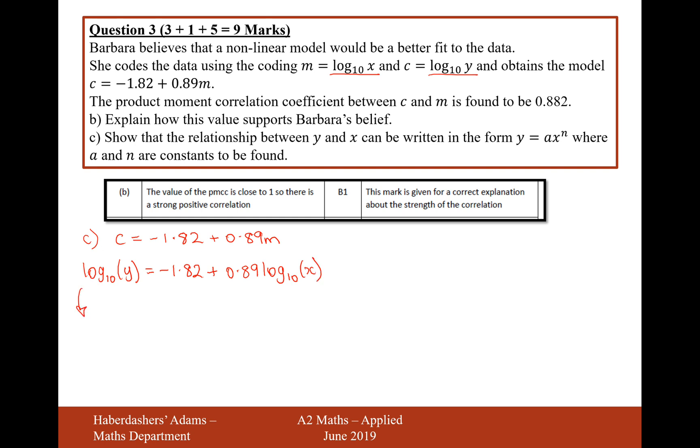So to get rid of this log base 10, what we'll have to do is do 10 to the power of both sides. That's going to give us Y equals 10 to the power of, now we can't do this individually, we have to do it all together, minus 1.82 plus 0.89 log base 10 of X. Okay, so that's the best we can do on the right-hand side. You can't do it individually. But what we're now going to use is the rule of indices that will split up this addition on the indice into a multiplication of two different powers where the base is both 10. So it'll be 10 to the minus 1.82 times 10 to the 0.89 log base 10 of X.